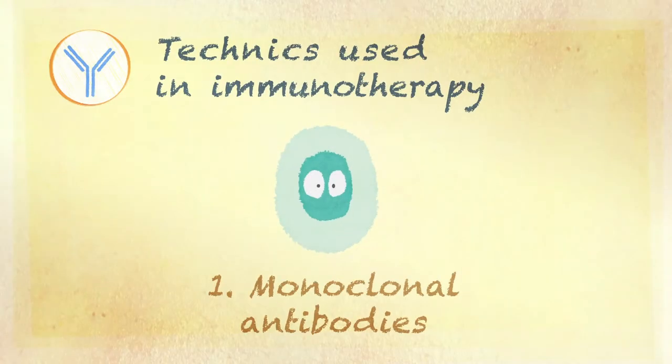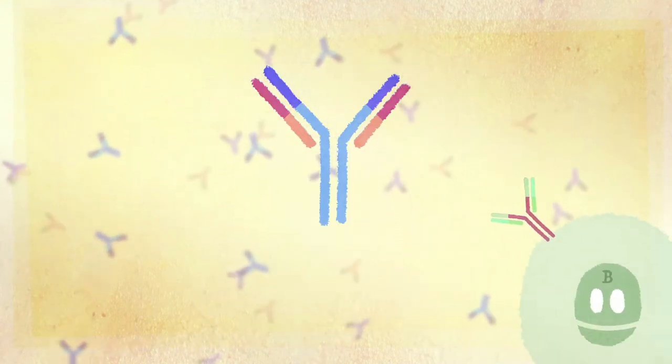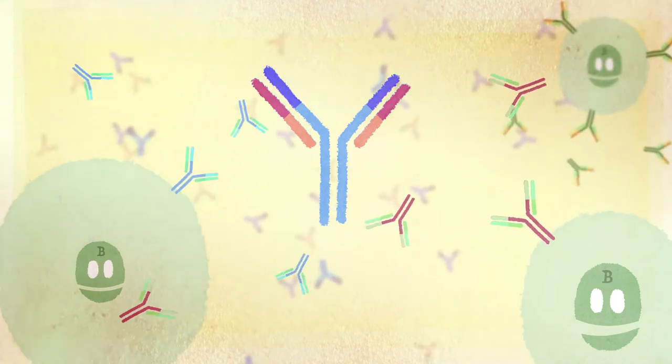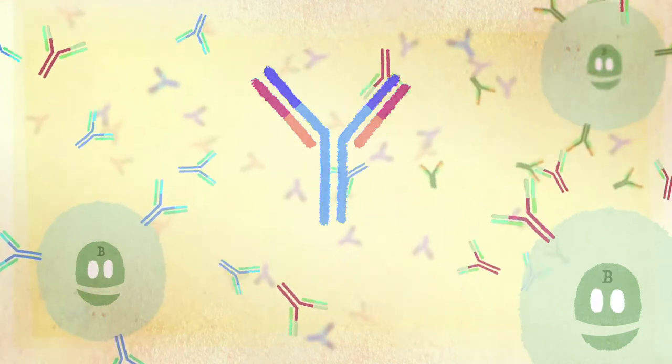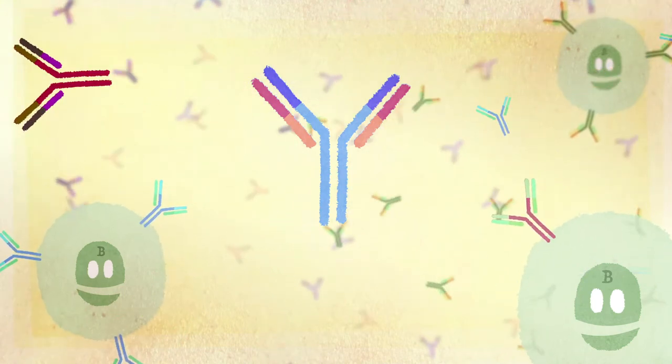Monoclonal antibodies. Antibodies are Y-shaped molecules from the protein family. Our body produces billions of them and each type of antibody is associated with a specific action. If an antibody finds its target, it attaches itself to it.